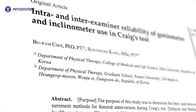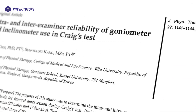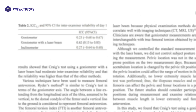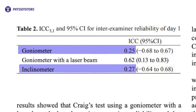Choi et al. in 2015 evaluated the inter-rater reliability of Craig's test with different measurement instruments. They found poor inter-rater reliability for the goniometer at 0.25 and 0.27 for the inclinometer, while only a goniometer with a laser beam had moderate inter-rater reliability of 0.62. For this reason, the clinical value of this test is rather weak.